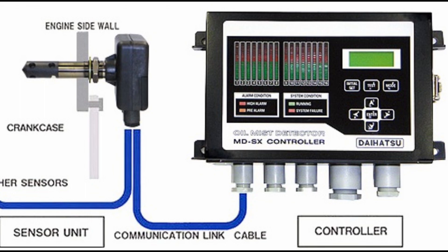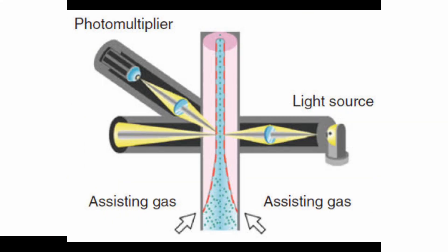So another type of OMD used is light scattering type OMD. This method detects oil mist by measuring the light scattered by oil droplets.